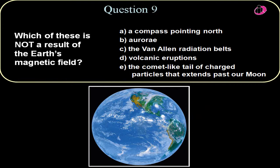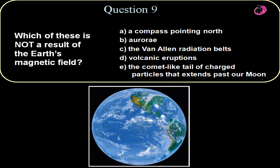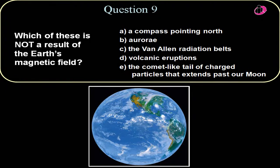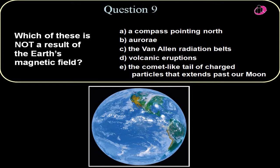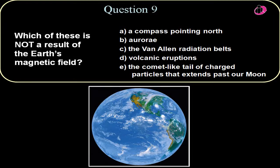Question number nine, which of these is not a result of the Earth's magnetic field? Earth has a magnetic field due to the swirling molten matter in its outer core. It allows us by the dynamo effect to have this relatively significant magnetic field for a terrestrial planet. That causes a compass to point north, so that is a definite result.